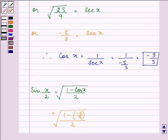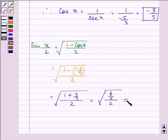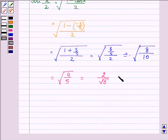And that is equal to square root of (1 plus 3/5) divided by 2, which gives us square root of (8/5 divided by 2), that is square root of 8/10, which equals square root of 4/5, which is 2 by root 5. So this is sin x/2.